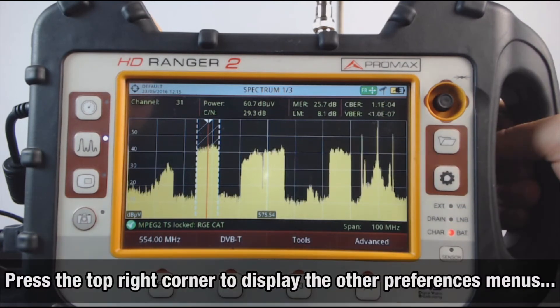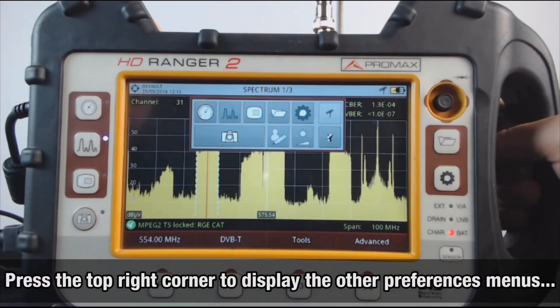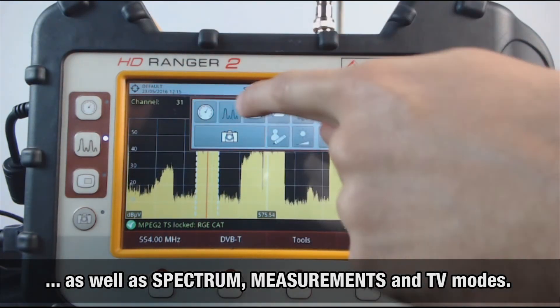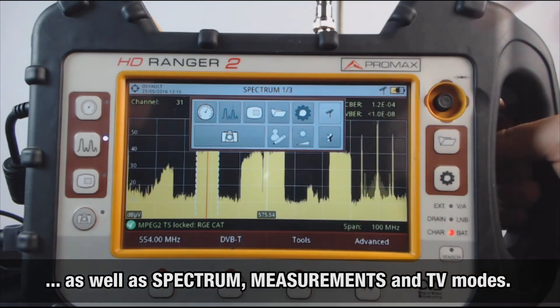By pressing the top right corner of the screen, the other preferences menus can be accessed, as well as spectrum, measurements, and TV modes.